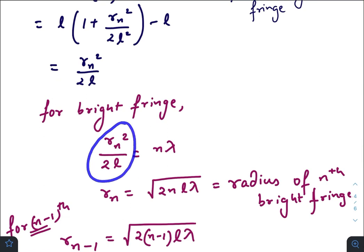Where n will be equal to 0, 1, 2, where 0 represents the central bright spot.